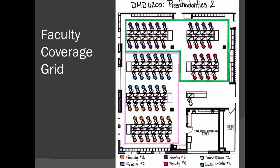For example, as you see in the chart above, the rows that are color-coded in orange will be covered by faculty number one. The ones in blue will be covered by faculty number two. They each have three rows and their backup is course director one.